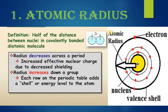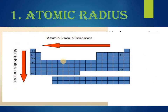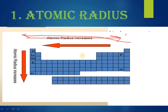The first property is atomic radius. It is defined as half of the distance between the nuclei in a covalently bonded diatomic molecule. Atomic radius decreases across a period due to increased effective nuclear charge with decreased shielding. Atomic radius increases down a group because each row adds a new shell or energy level. Moving left to right, the number of shells remains the same but effective nuclear charge increases, so atomic radii decreases.